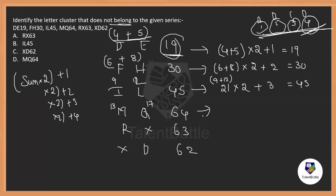13 plus 17 is 30. 30 into 2, 60. 60 plus 4, 64. This is also correct. And what about this one? 18 and 24. 18 plus 24 is 42. 42 into 2 is 84. 84 plus 5. It is supposed to be like this. That means, 89 should be the value, not 63.